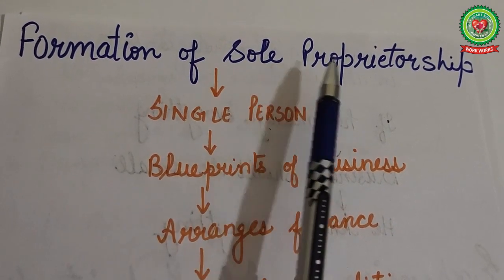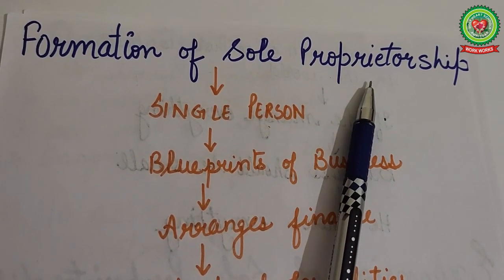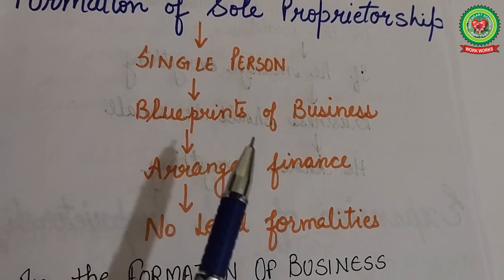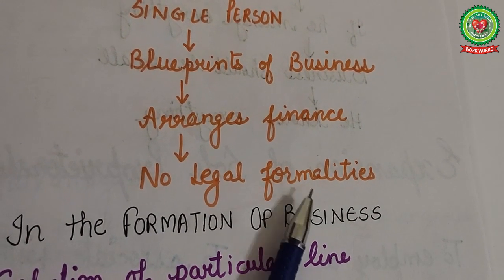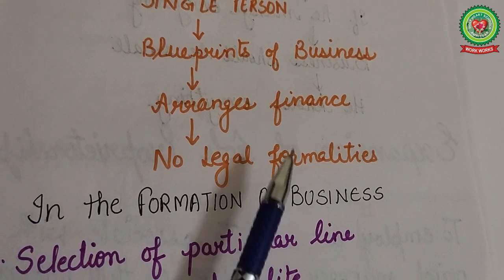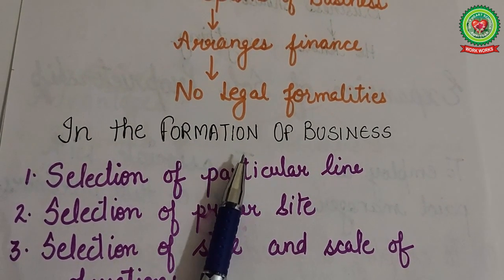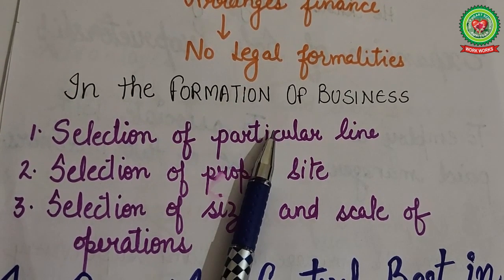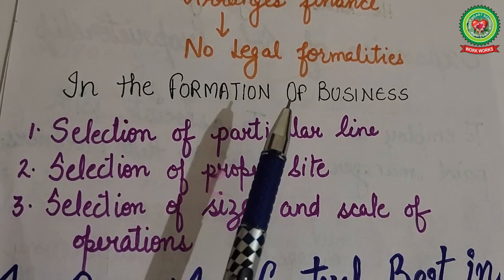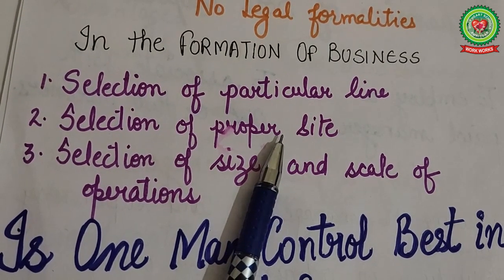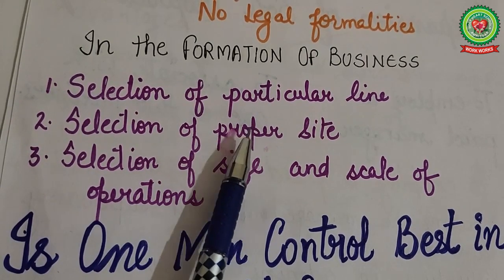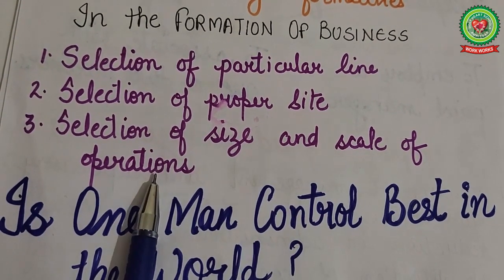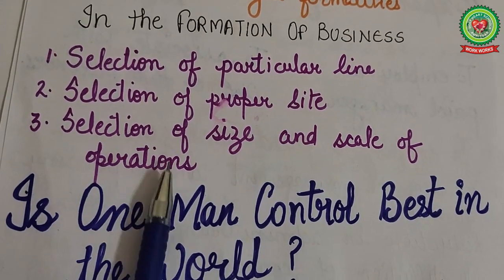The next topic is formation of sole proprietorship business. It is started by the initiative of a single person who prepares the blueprint of the business and arranges the necessary finance. No legal formalities are required. The first decision involves selection of a particular line of business, which depends on the demand of the product, availability of necessary resources, and scope of earning profits. Next is selection of a proper site, considering customer requirements and nearness to the market. Finally, selection of size and scale of operations depends upon the necessary finance required.